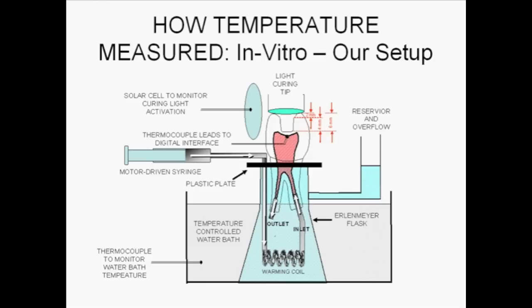The tooth has a divergent occlusal preparation, and a thermocouple is placed so that it is in contact with the pulp chamber roof directly opposite the pulpal floor of the preparation. The light guide is held 2mm distance from the cable surface margin, and a solar cell captures information related to the exact time when the curing light is activated and turns off.